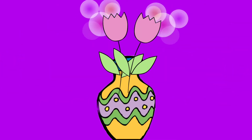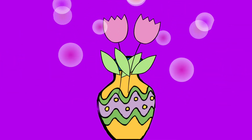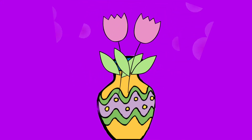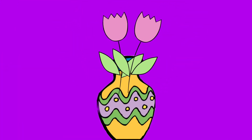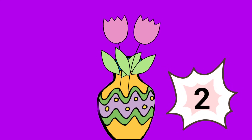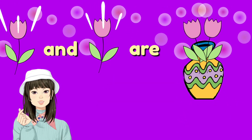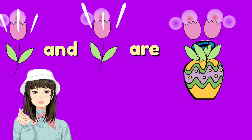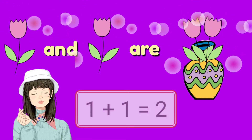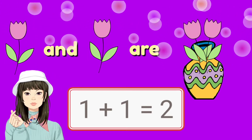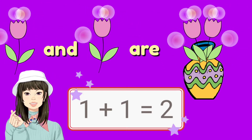If we put the flowers in the vase, how many flowers will there be in the vase? Let's see if your answer is correct. How many flowers do you see? Write two flowers. We say 1 plus 1 equals 2, and we write 1 plus 1 equals 2. This is called the number sentence.